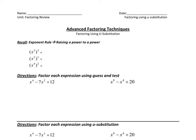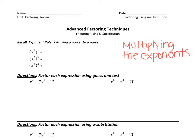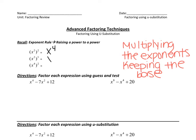The first thing will be the exponent rule of raising a power to a power. So when I'm taking x squared and squaring it, or x squared and cubing it, or x to the fourth and squaring it, I want to know what the rule is. The rule is that you multiply the exponents and keep the base. So we're keeping the base of x. The first one will be x to the fourth, the second will be x to the sixth, and the third will be x to the eighth.